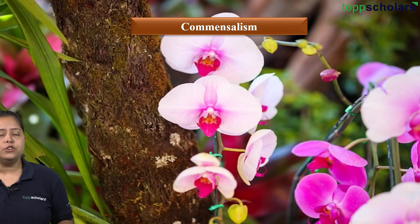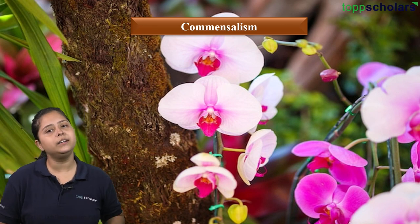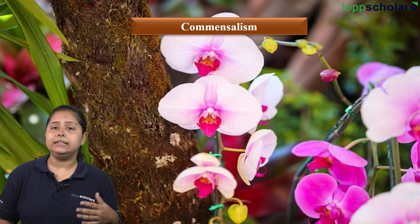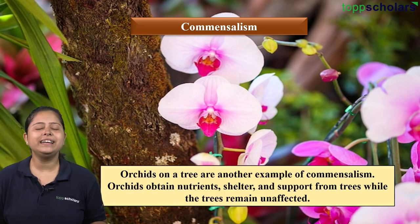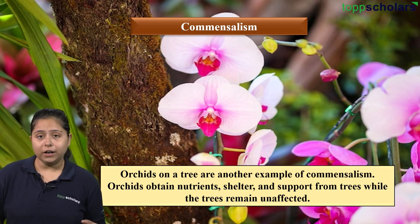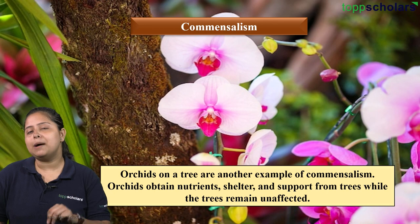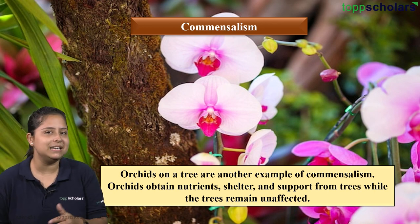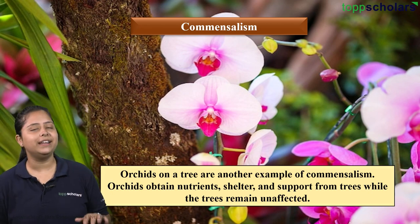Another commensalism example: orchids growing on a tree. Orchids get nutrition from the tree — they are benefited — while the tree is neither harmed nor benefited. Plus sign for orchids, zero sign for the tree. Orchids obtain nutrients, shelter, and support from the tree while the tree remains unaffected. The three commensalism examples are: sharks and remora, whales and barnacles, and orchids on a tree.